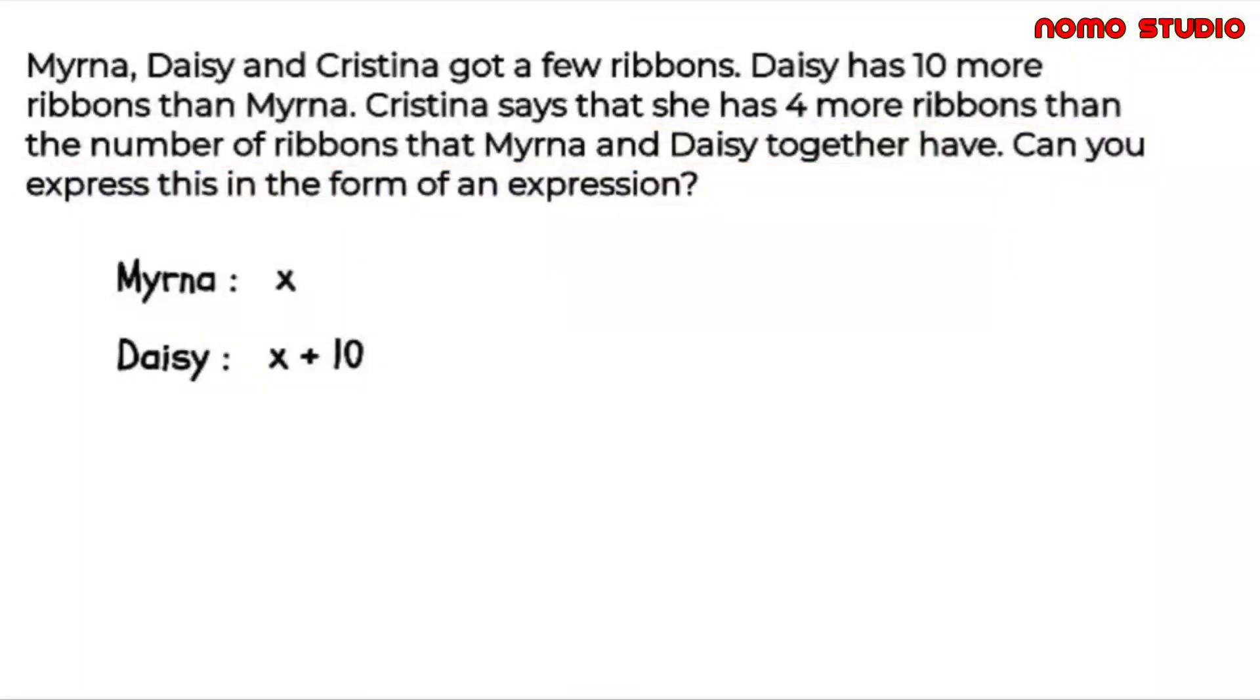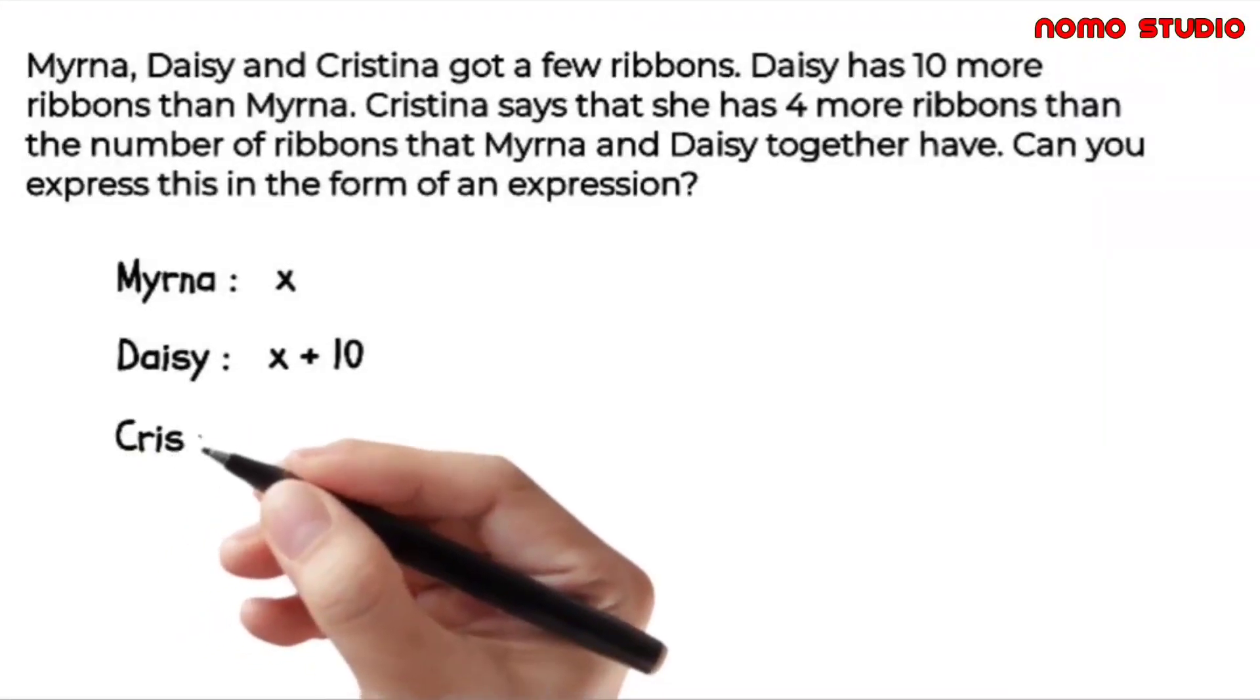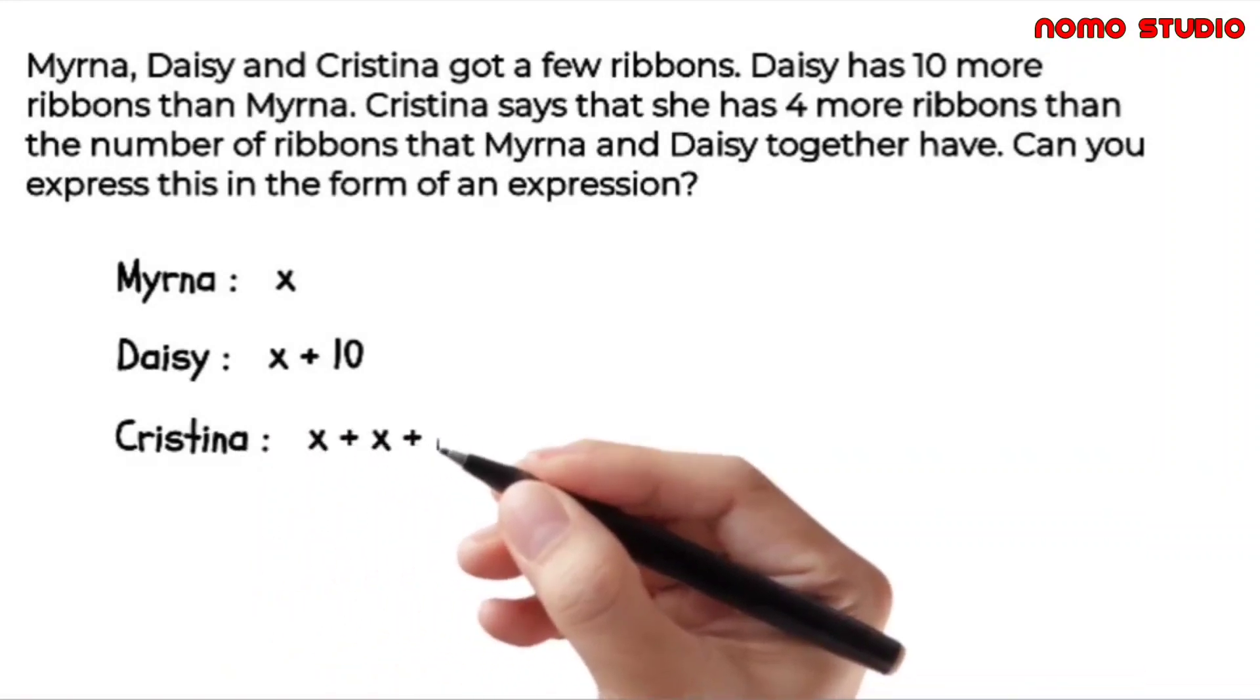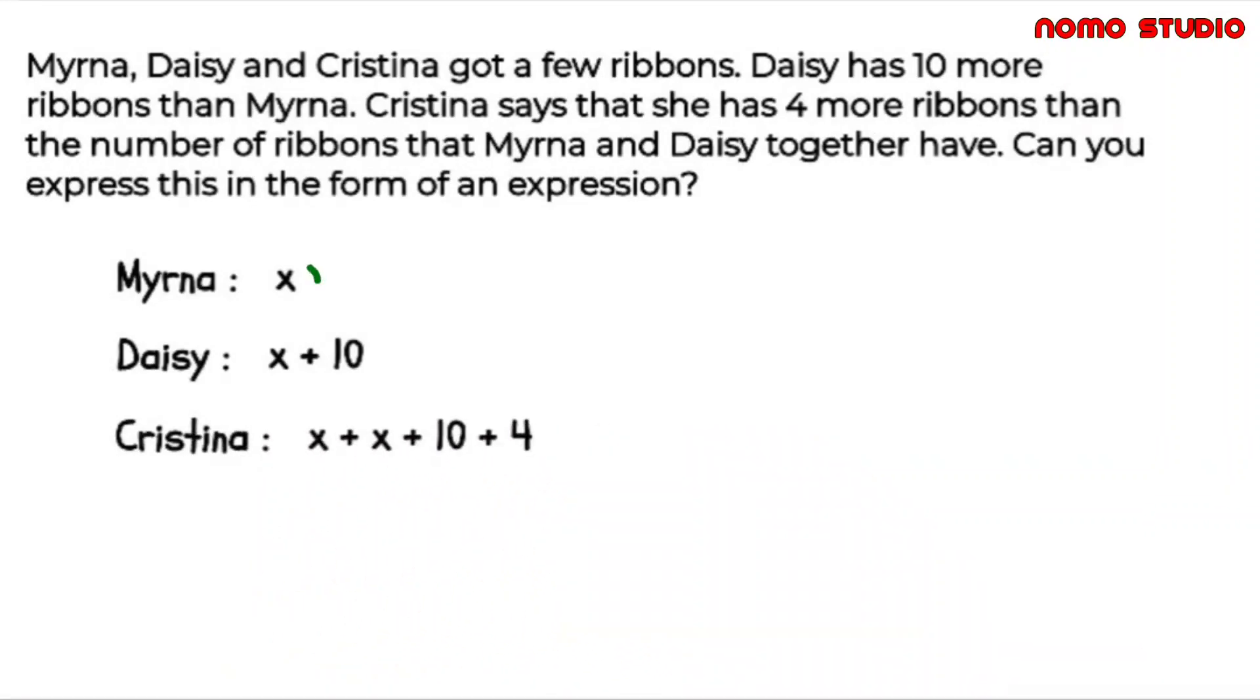But how can we write this in an expression? All you have to do is to add Myrna, Daisy, and Christina's total number of ribbons. So we have X plus X plus 10, then plus 4.